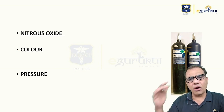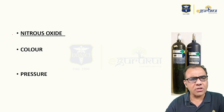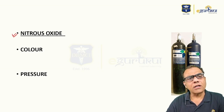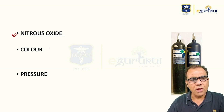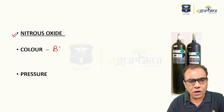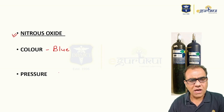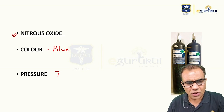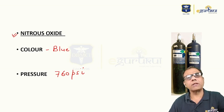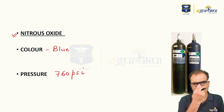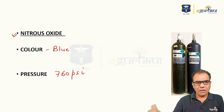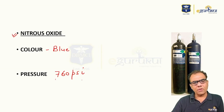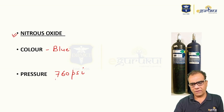The second cylinder in common use is nitrous oxide. Nitrous oxide is stored in blue color cylinders at a pressure of 760 pounds per square inch — blue color cylinders at a pressure of 760 psi.